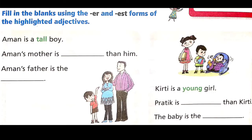Open page number 58. Fill in the blanks using the ER and EST forms of the highlighted adjectives. Aman is a tall boy — the highlighted word here is tall. Aman's mother is taller than him, T-A-L-L-E-R. Then, Aman's father is the tallest, T-A-L-L-E-S-T.